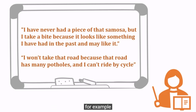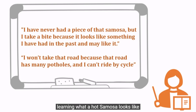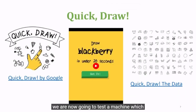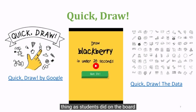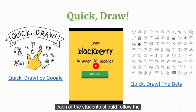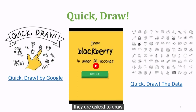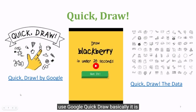For example, I like to take a piece of samosa by learning what a hot samosa looks like and then plan to eat it. We are now going to test a machine which is going to try to predict the same thing as students did on the board. This is the link for Quick Draw. Each student should follow the instructions and draw the items they are asked to draw. Basically, it is predicting what we are drawing on the screen.